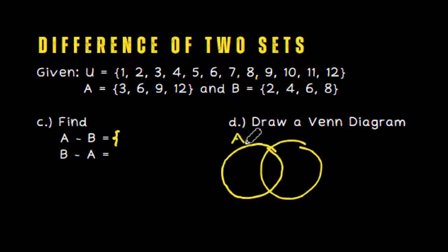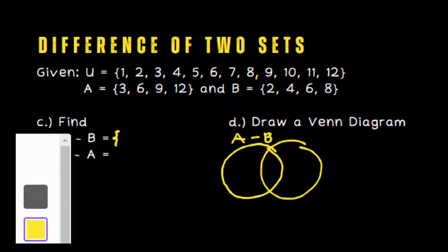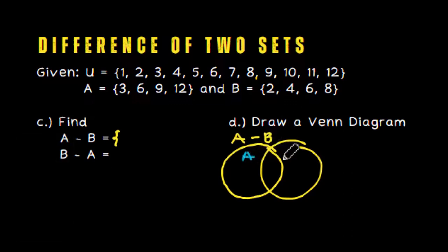We have A minus B. The elements consist of A: 3, 9, 12, and 6. We also have 2, 4, and 8 in B. So, we include A but not B. How do we visualize that? The shaded region is only set A.